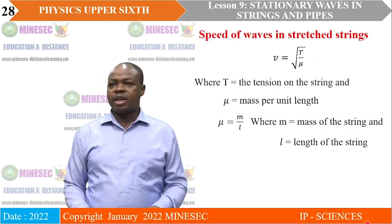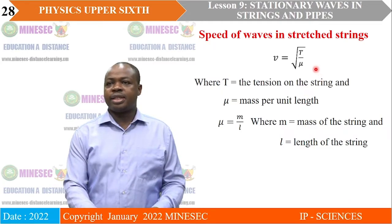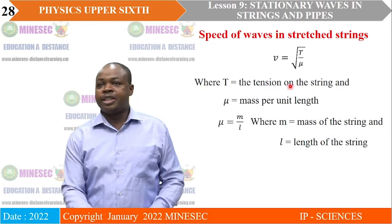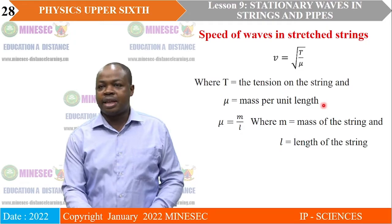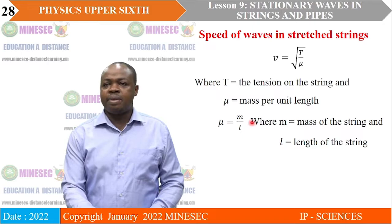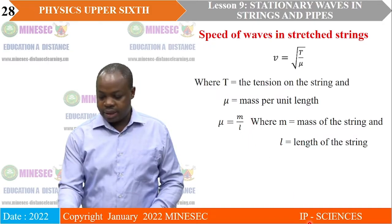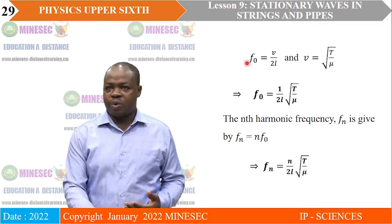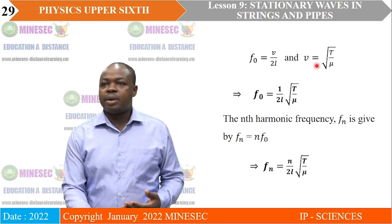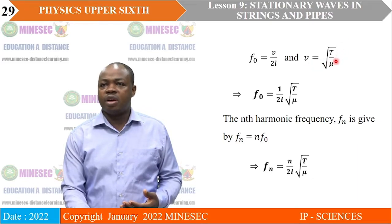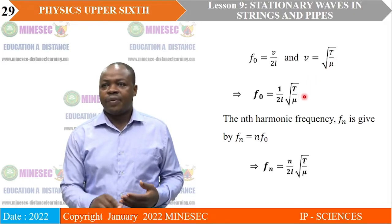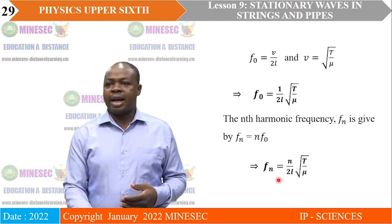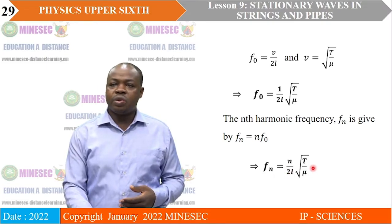The speed of sound in a string is given by V = √(T/μ), where T is the tension in the string and μ is the mass per unit length (μ = mass/length). Since the fundamental frequency is F₀ = V/2L, substituting V = √(T/μ) gives the fundamental frequency in terms of tension, length, and mass per unit length. The nth harmonic frequency can also be calculated using this equation.